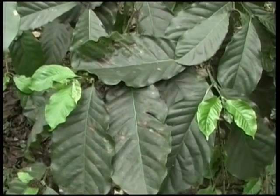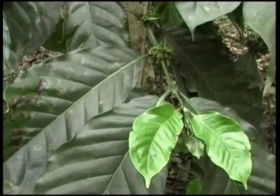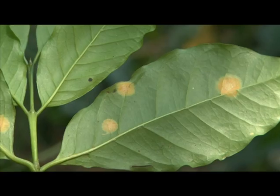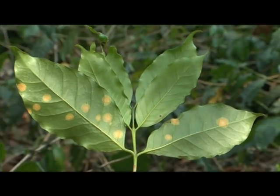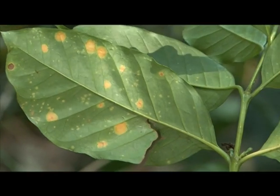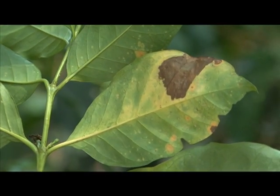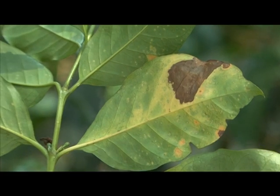As the name suggests, the rust primarily attacks the coffee leaves, especially the young leaves. The life cycle of the rust fungus is very complex, during which thousands of tiny spores are produced which can disperse with the help of rain splashes, water, or wind. The spores land on the leaves, germinate, and enter the leaf tissue through the stomata, which are located on the lower surface of the leaves.